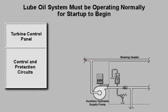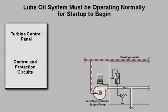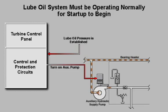During a normal turbine startup, lube oil must be at normal operating pressure before the control system will activate the auxiliary hydraulic supply pump. When the protection system verifies that lube oil pressure is established, the auxiliary hydraulic supply pump turns on and the turbine begins its crank cycle.